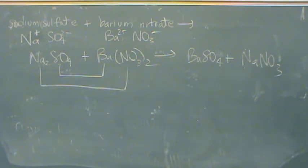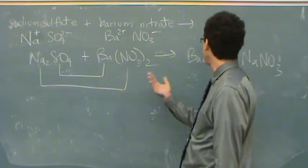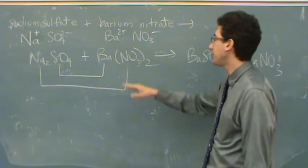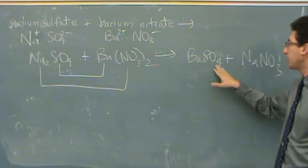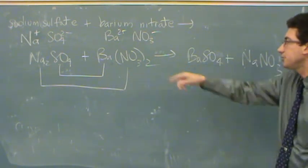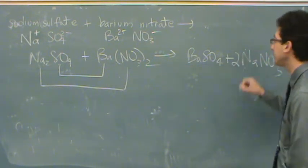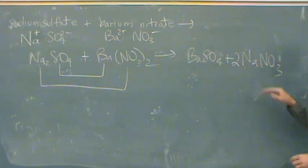Now I've got to balance it. So they all are pretty equivalent. You start wherever you want. One barium, one barium. One sulfate, one sulfate. But two sodiums, so I need two sodiums here. Then two nitrates, two nitrates. It's balanced.